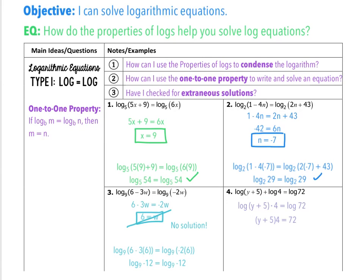The equation I'm going to write is (y plus 5) times 4 equals 72. I distribute the 4 to get 4y plus 20 equals 72, and when I finish solving that out, I end up with y equals 13. I always need to go back and double check — 13 plus 5 is not a negative number, so I'm good. I want to highlight that I only turn this into a condensed version because I had two logs being added together, not when the two numbers that are part of one log are being added together inside the parentheses.